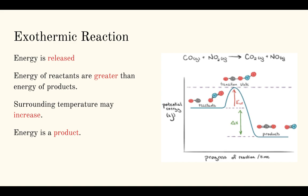The next reaction is called the exothermic reaction. Here, energy is being released, which means the energy of the reactants is actually greater than the energy of the products. The surrounding temperature may increase. The reactants have a bunch of energy stored in them, and when the reaction occurs, all this extra stored energy has to go somewhere. Some of it goes into the products, but the products have lower energy because not all of the reactant energy goes to them.